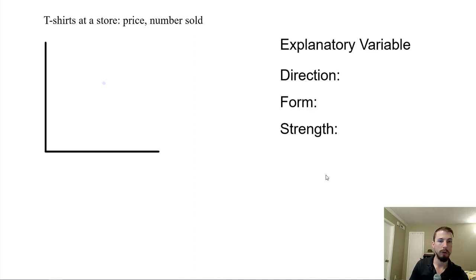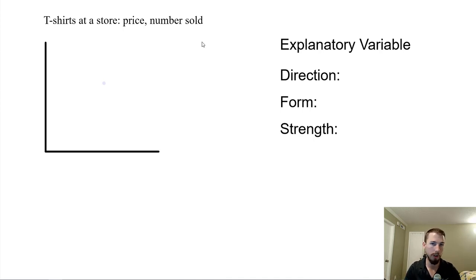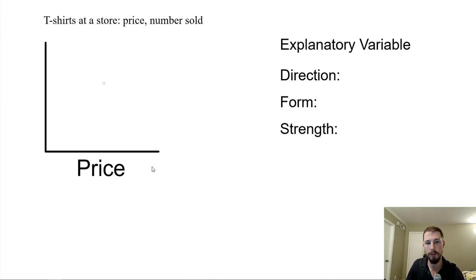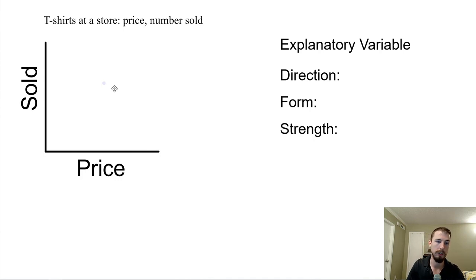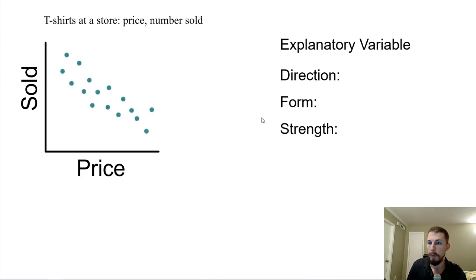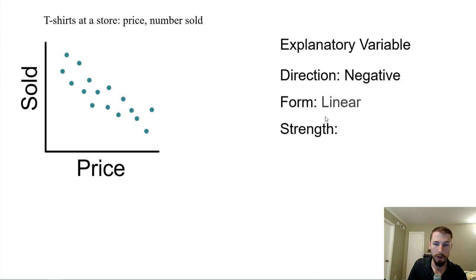For T-shirts at a store: the explanatory variable is price. As we increase the price of T-shirts, we want to see how that changes the number sold. Clearly this would be a negative direction — if we increase the price too much, people are no longer going to buy the T-shirts, even though we might make more profit per shirt. You've got to find that sweet spot — that's what business is all about. The form is linear or possibly curved, and the strength would be moderate.